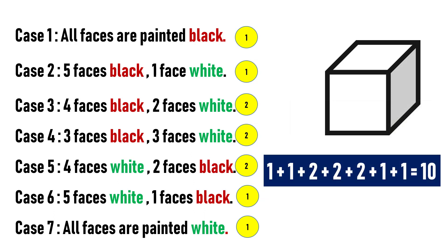So, total is 1 plus 1 plus 2 plus 2 plus 2 plus 1 plus 1, which is equal to 10. Hence, the total possibilities are 10. If you follow these simple steps, any difficult problem can be solved easily.